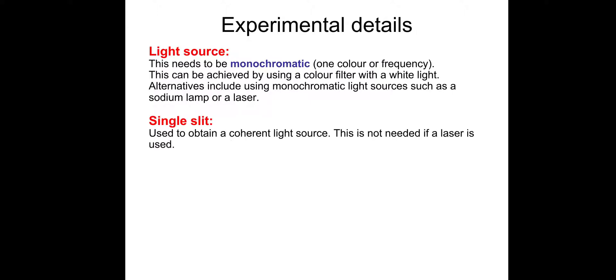Single slit is used to obtain a coherent light source; it's not needed if we use a laser. Double slits: typical width might be 0.1 mm and typical separation 0.5 mm. The typical width isn't examined; separation is part of the equation.